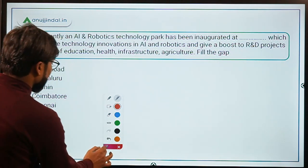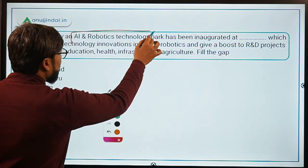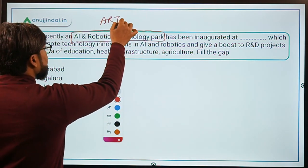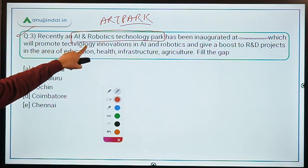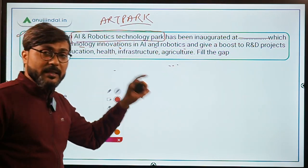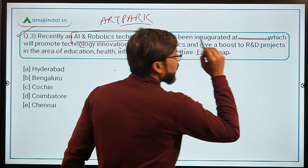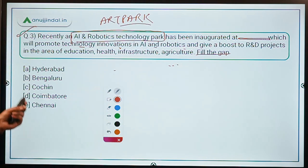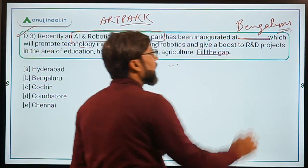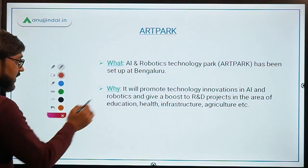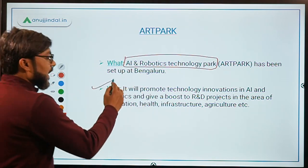Now let's move on to question number 3, which is about a park that was recently inaugurated. The AI and Robotics Technology Park, known in short as ART Park, has been inaugurated at Bengaluru. It will promote technology innovations in AI and Robotics and give a boost to research and development projects in the fields of Education, Health, Infrastructure, and Agriculture. The answer to fill the gap is Option B - Bengaluru.